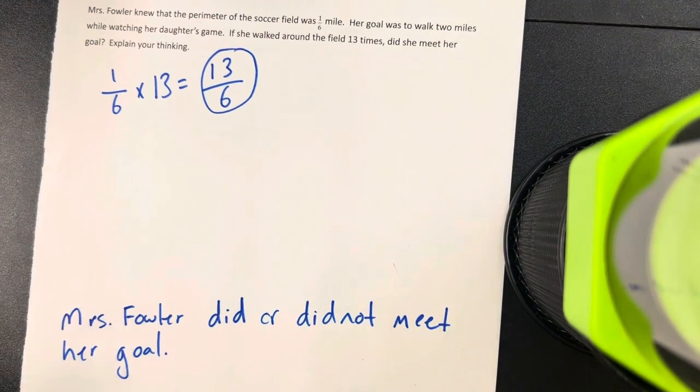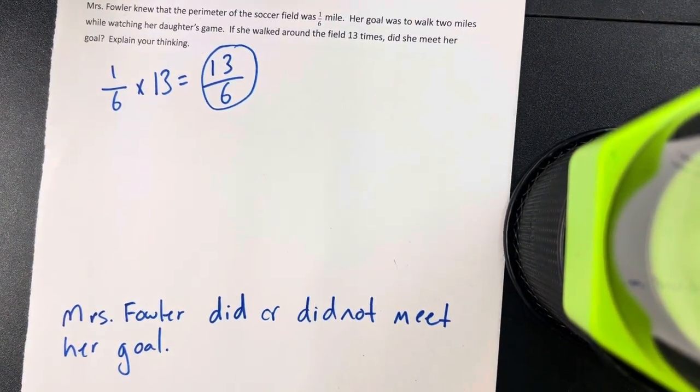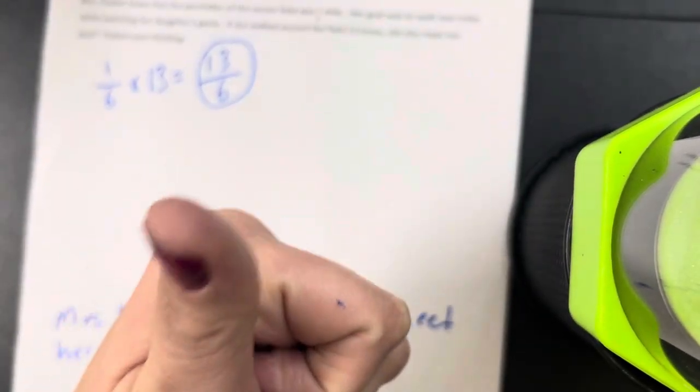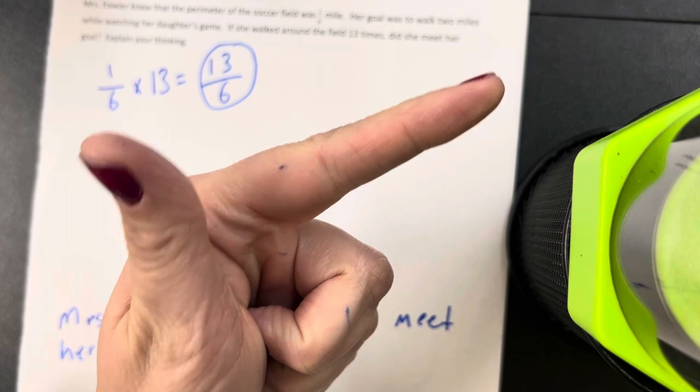I'm going to skip count by six to see how many groups of six are in thirteen. So, six, twelve. So how many groups of six are in thirteen? Two.